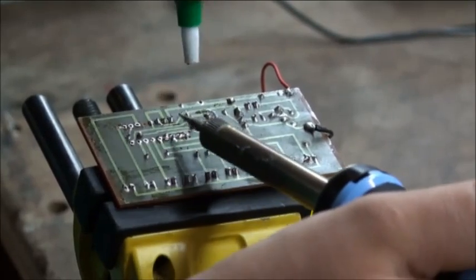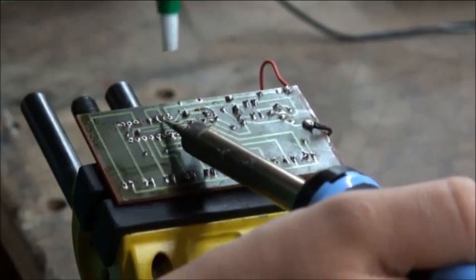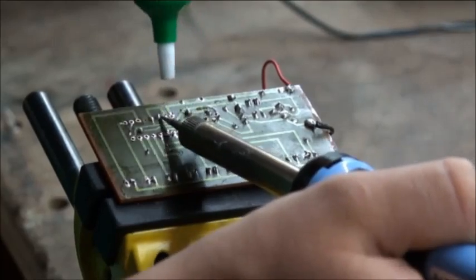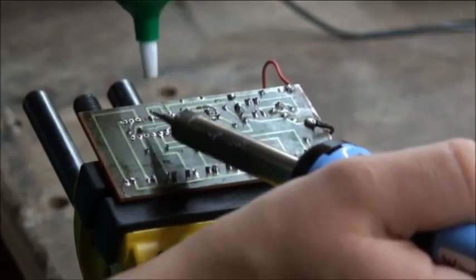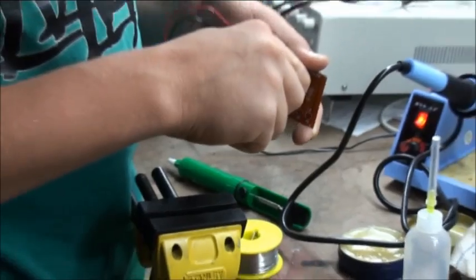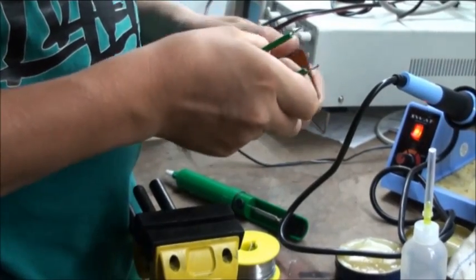Sometimes it doesn't, so just until you see all the solder go away, just keep on doing it. Okay, once you do this to all the legs, you are going to take it out with the tweezers. Just pull it a little, it will come out.